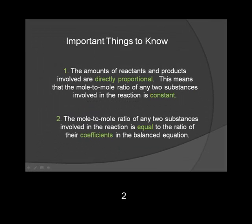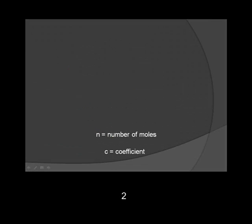Two important things to know when solving a stoichiometry problem such as this are: 1. The amounts of reactants and products involved are directly proportional. This means that the mole-to-mole ratio of any two substances involved in the reaction is constant. 2. The mole-to-mole ratio of any two substances involved in the reaction is equal to the ratio of their coefficients in the balanced equation.